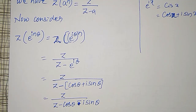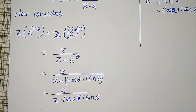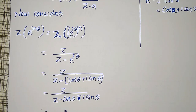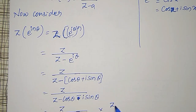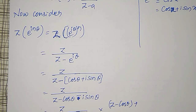And here, what is in the denominator — usually I will not keep the imaginary term. To avoid that, I have to multiply and divide by the complex conjugate of this, which is Z minus cos(θ) plus i·sin(θ). I can multiply and divide so that I can avoid the i in the denominator.